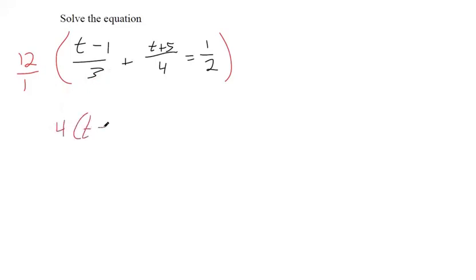We've got to write t minus 1 in parentheses because the entire numerator needs to be multiplied by 4. Same thing here, except the 12 and the 4 cross-cancel to make 3. Then over here, 12 times 1 half is just half of 12, that's 6.